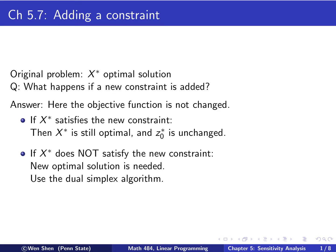Otherwise, if the optimal solution X star does not satisfy the new constraint, then you'll have to compute a new optimal solution. And the key algorithm one could use there is the dual simplex algorithm. Let's look at examples.